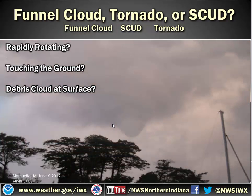Next example — you can see this little feature here. It looks very smooth, so I would say it looks like it's rapidly rotating. Obviously when you're there in person you'll be able to tell a little bit more based on the movement. Is it touching the ground? In this case, it doesn't look like it's touching the ground — it's above the trees — so we'll say no. Is there a debris cloud at the surface? Not that we can see. So in this case, there's a funnel cloud.